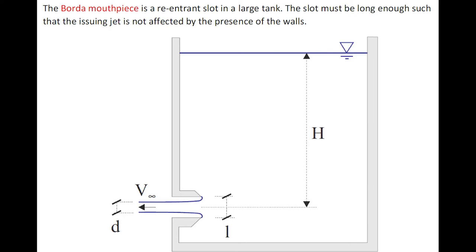The Borda mouthpiece is a re-entrant slot in a large tank. The slot must be long enough such that the issuing jet is not affected by the presence of the wall.